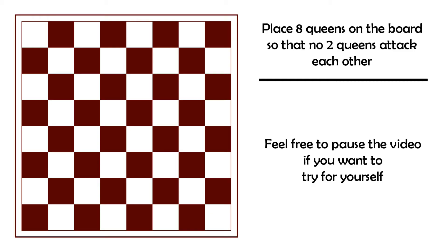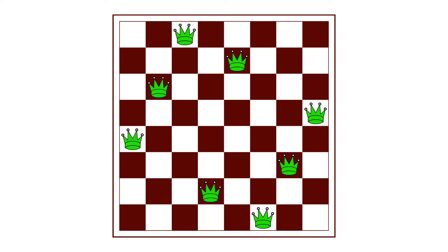But yeah, if you follow the same logic I just showed, you can easily find a solution or you can even find all 92 of them if you have nothing better to do with your life. For example, here's one of the solutions. If you want, you can pause the video here, check for yourself and see that there really are 8 queens and none of them are attacking each other.